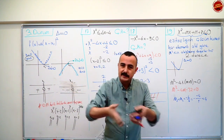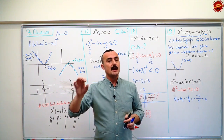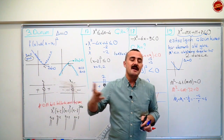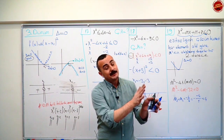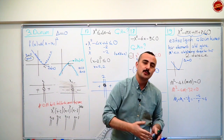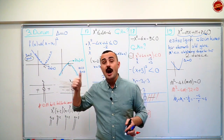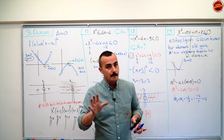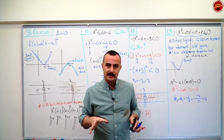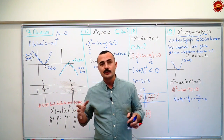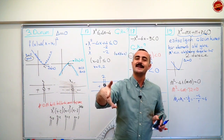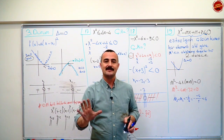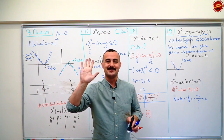Evet şimdi bu iki videomuzda ne yaptık? Delta'nın sıfırdan büyük olduğu durumu, x eksenini iki yerde kestiği durumu ve t et olduğu duruma baktık. Şimdi bizim baş belası olan bir durumumuz var: delta sıfırdan küçükse denklemlerde çözüm kümesi boş kümedir. Ama eşitsizlik sorularında çok kullandığımız delta'nın sıfırdan küçük olduğu durum var. Hep unutulan bir durum — onu ayrıntılı bir videoda alacağız. Bu yorumları güzelce sentezle, öğren. Selim hocaya güven. Hadi bakalım, kendine iyi bak. Görüşmek üzere.